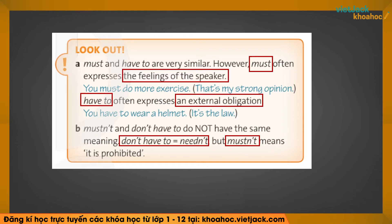Nhớ cho cô nhé: 'must' chỉ sự cần thiết từ bản thân người nói, còn 'have to' là do yếu tố bên ngoài — do luật hoặc ai đó ép mình. Cặp số 2: nhiều bạn nhầm rằng 'mustn't' bằng với 'don't have to'. Nhưng không phải nhé! 'Don't have to' bằng nghĩa với 'needn't' — không cần thiết phải làm gì. Còn 'mustn't' mang nghĩa là cấm không được làm gì. Ghi chép cẩn thận cả ví dụ vào để không bị nhầm.